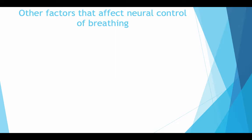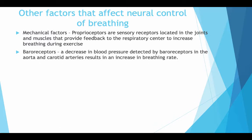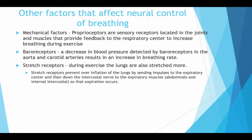Other factors that affect neural control of breathing: mechanical factors — proprioceptors are sensory receptors located in the joints and muscles that provide feedback to the respiratory centre to increase breathing during exercise. Baroreceptors — a decrease in blood pressure detected by baroreceptors in the aorta and carotid arteries results in an increase in breathing rate. Stretch receptors — during exercise the lungs are stretched more, and stretch receptors prevent over-inflation of the lungs by sending impulses to the expiratory centre and down the intercostal nerve to the expiratory muscles so that expiration occurs.